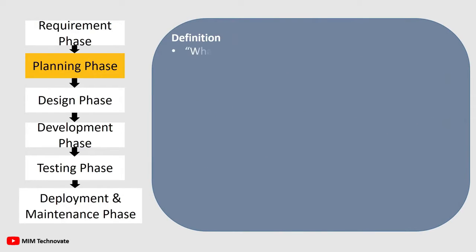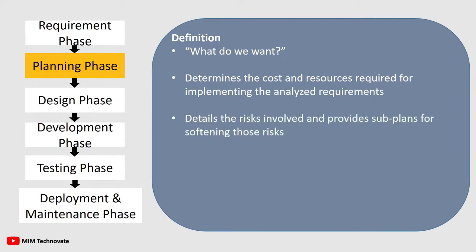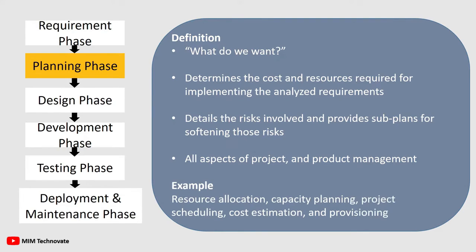Planning Phase — What do we want? In this stage of the SDLC, the team determines the costs and resources required for implementing the analyzed requirements. It also details the risks involved and provides sub-plans for softening those risks. The Planning Phase encompasses all aspects of project and product management, including resource allocation, capacity planning, project scheduling, and cost estimation and provision.